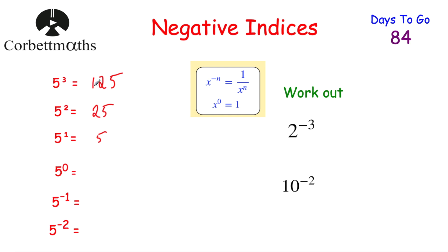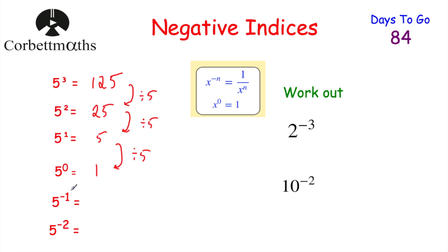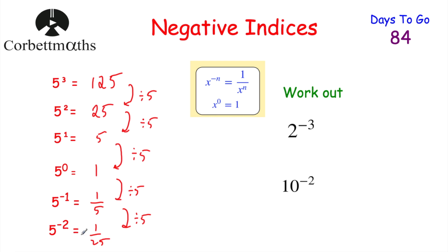Now let's look at the pattern in our answers. To get from 125 to 25 we divide by 5, then divide by 5 again to get 5. Divide by 5 once more: 5 ÷ 5 = 1, so 5 to the power of 0 equals 1. This means any number (except 0) to the power of 0 equals 1 — so x to the power of 0 = 1, as long as x ≠ 0.